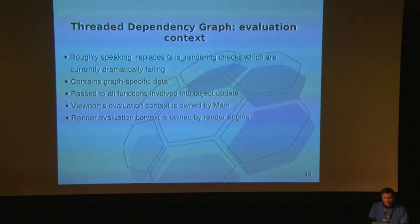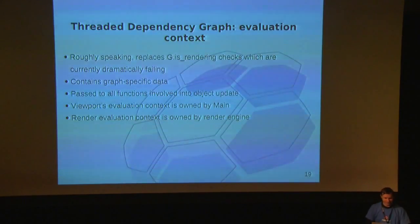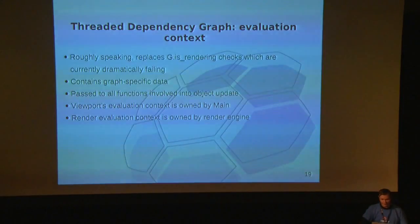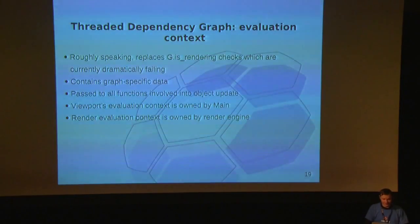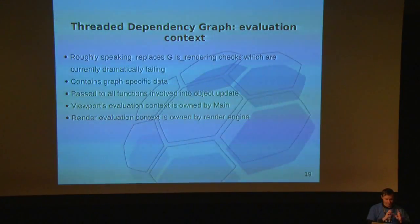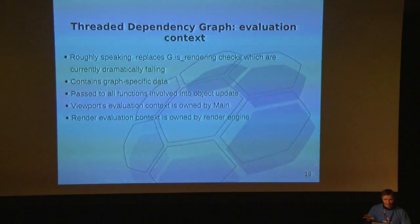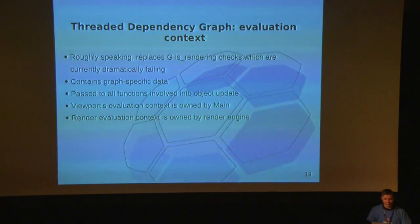To support local graphs, we added an entity called the evaluation context. It's basically a replacement for the old global is_rendering flag, which fails dramatically — especially when you have viewport rendering alongside final rendering. This context contains all the local data for the graph itself, and it's passed to all the object update routines. So object update functions know for a fact whether they should be doing viewport rendering or final rendering and so on.